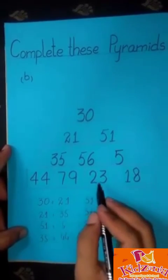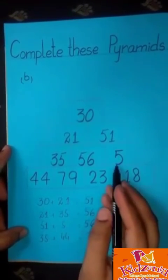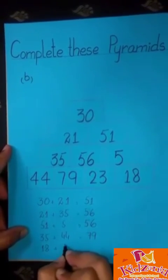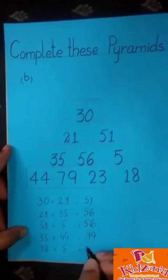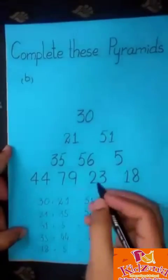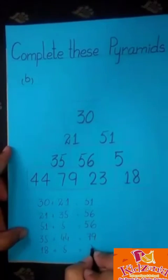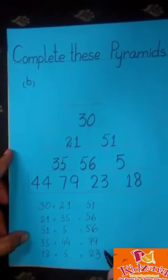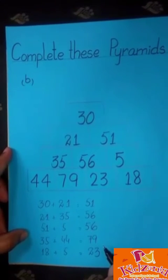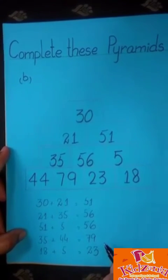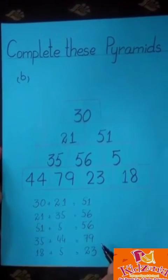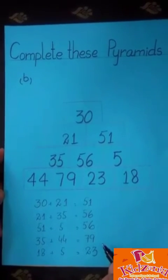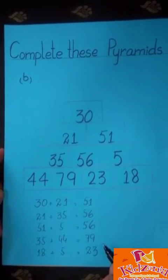Now we add 18 with 5. 18 plus 5, and we get the answer of 23. Students, these are the number equations of this pyramid. Dear students, I hope you understand my today's lecture. Now it's the time to say Allah Hafiz, stay safe.